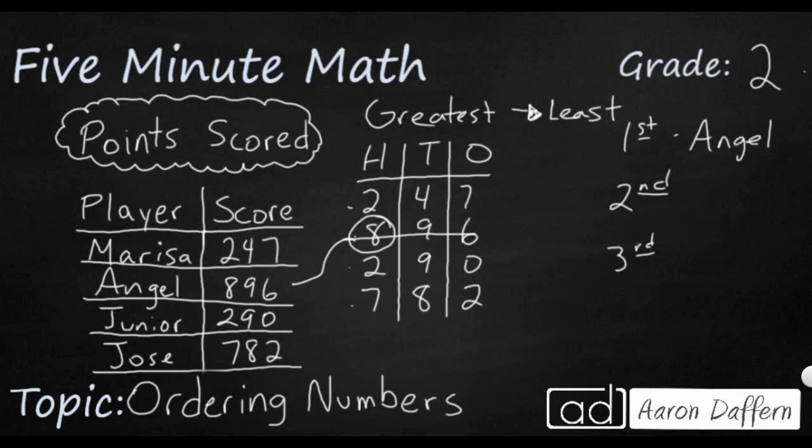Now, second place is our next largest number. We've already crossed out this 896. I've got 200, 200, and 700. And it's going to be this 700. And that is Jose. So let's mark this out.